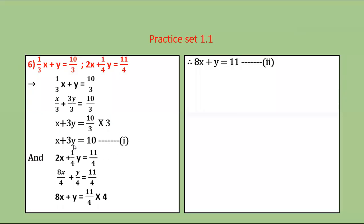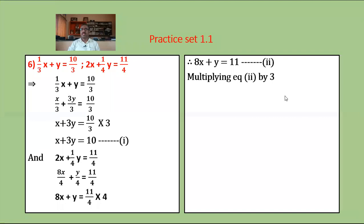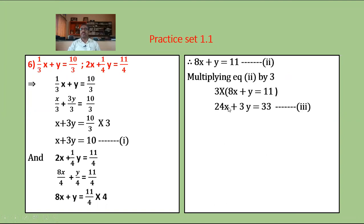Observe the coefficients of x and y in equations 1 and 2. In equation 1, the x coefficient is 1; in equation 2 it is 8. In equation 1, the y coefficient is 3; in equation 2 it is 1. To equate the coefficient of y, multiply equation 2 by 3: 3 times (8x plus y equals 11) gives 24x plus 3y equals 33 — equation number 3.